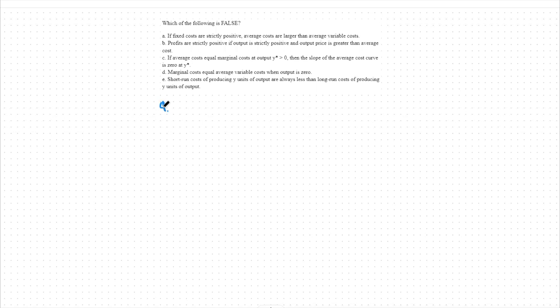To start, let's look at option A: if fixed costs are strictly positive, average costs are larger than average variable costs. We'll say fixed costs are positive, then average variable cost is less than average cost.